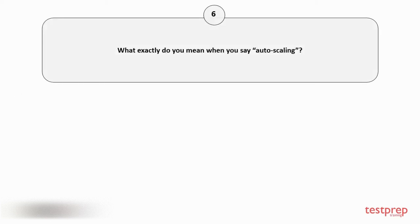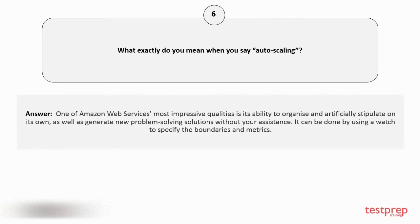Question number 6: What exactly do you mean by auto scaling? One of Amazon Web Services' most impressive qualities is its ability to organize and artificially stipulate on its own, as well as generate new problem-solving solutions without your assistance. It can be done by using a watch to specify the boundaries and metrics.